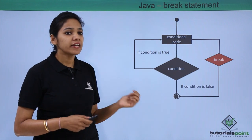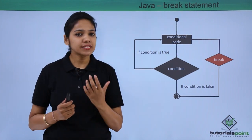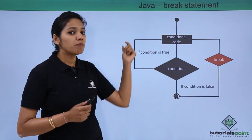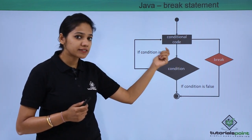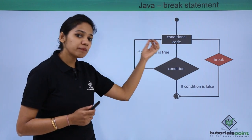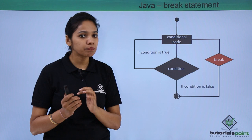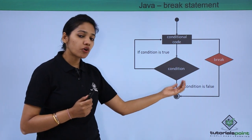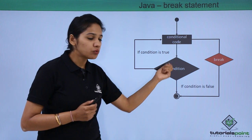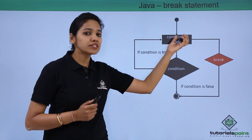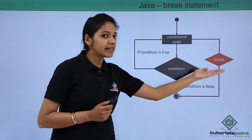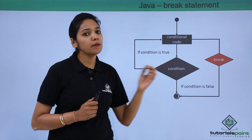By this graph, it is very clear how a break statement works. It says that if the condition is met, a block of statements is being executed. Until the condition is true, the cycle keeps moving or the iteration keeps repeating, and once the condition is false, it comes outside. But what if the condition is true and it is trying to execute a certain block of statements, and at that time it encounters a keyword called break?